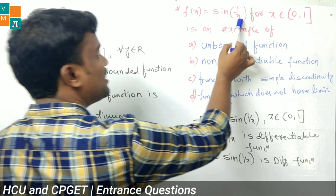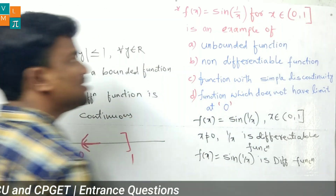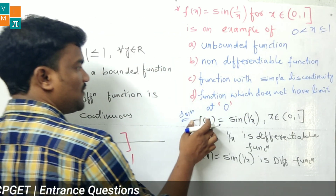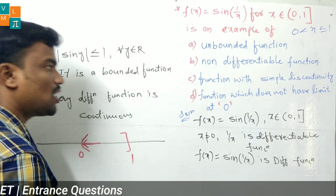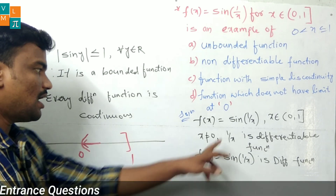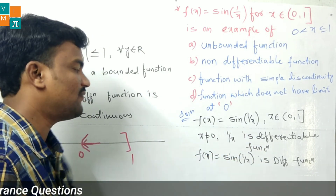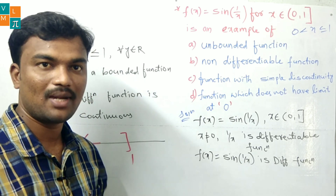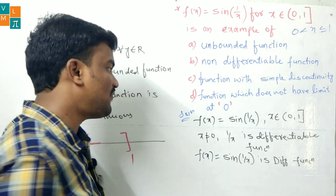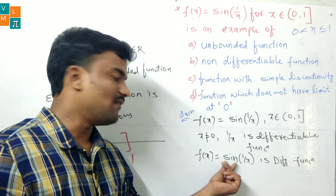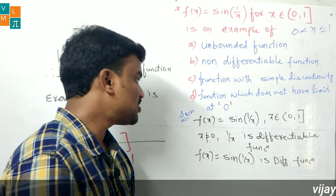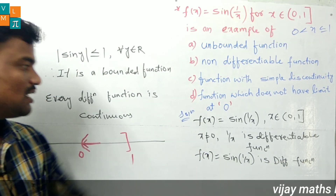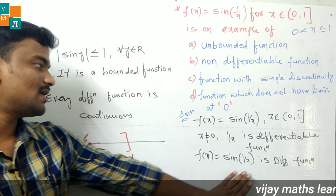f(x) = sin(1/x) where x ∈ (0, 1]. Here the x value is not equal to 0. Now, 1/x is a differentiable function since 1 is a constant and x is a polynomial — every polynomial is differentiable — so 1/x is also differentiable. Since sin is a trigonometric function and every trigonometric function is differentiable, and the composition of two differentiable functions is differentiable, sin(1/x) is a differentiable function.